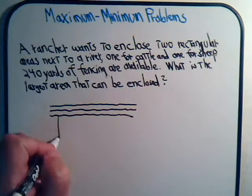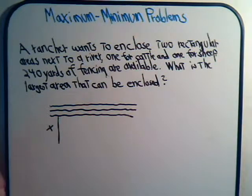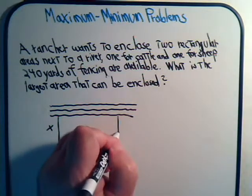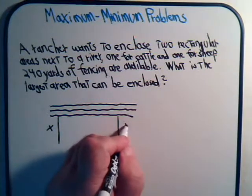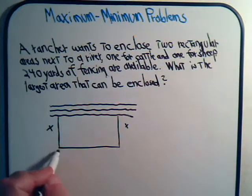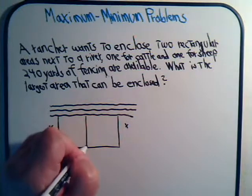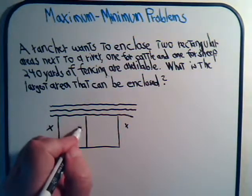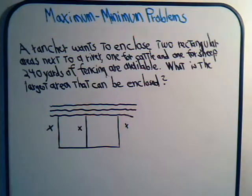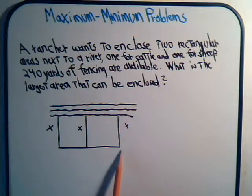And then we might have the fence going out like this from the river at a distance. We don't know what it is yet, so we'll just say x. And it's supposed to be two rectangular areas, so on the other side here, it would also go out from a distance x from the river. And then here would be the other boundary. And he wants to have two rectangular areas, so we have to have another fence in between here. And if we set it up like this, we don't know how far this distance is going to be. What will be the length of this side?